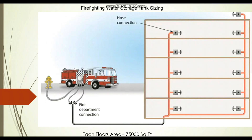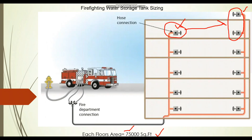Coming back to our system: we have 500 GPM from the remotest standpipe. For the next standpipe, since each floor area is 75,000 square feet — not exceeding 80,000 square feet — we consider only one landing valve at 250 GPM. So the total fire pump flow for our project is 500 GPM plus 250 GPM, giving 750 GPM as the fire pump size.